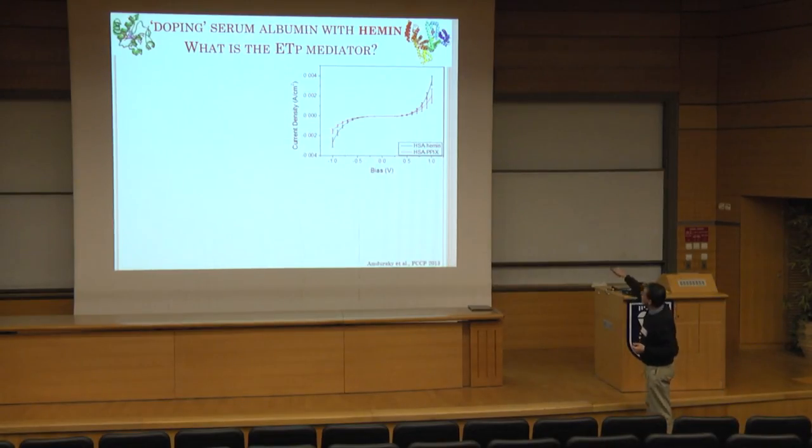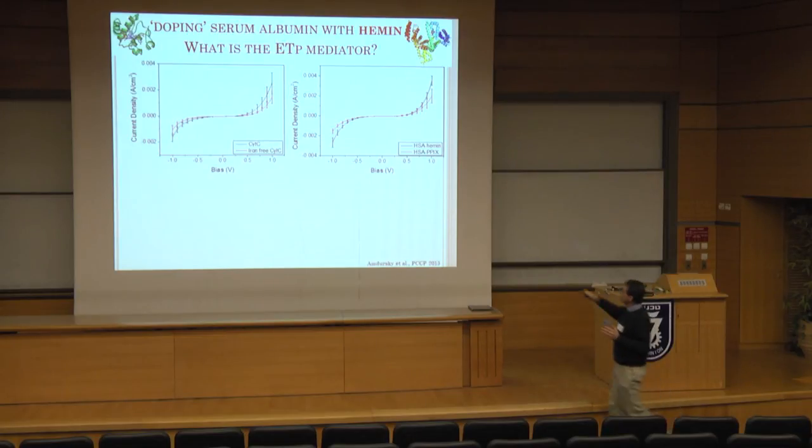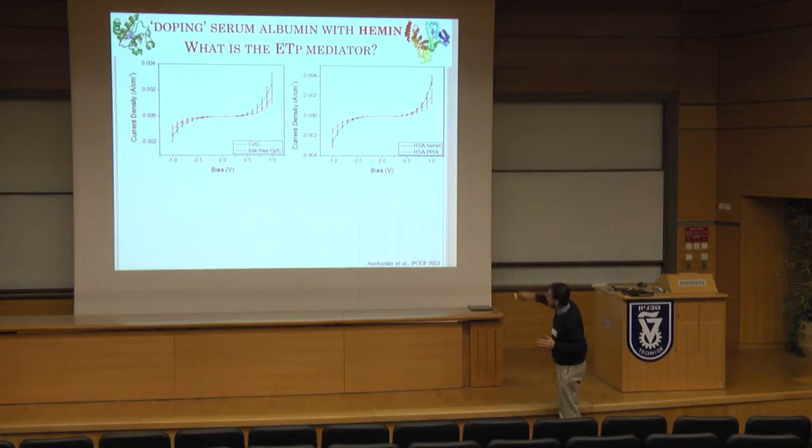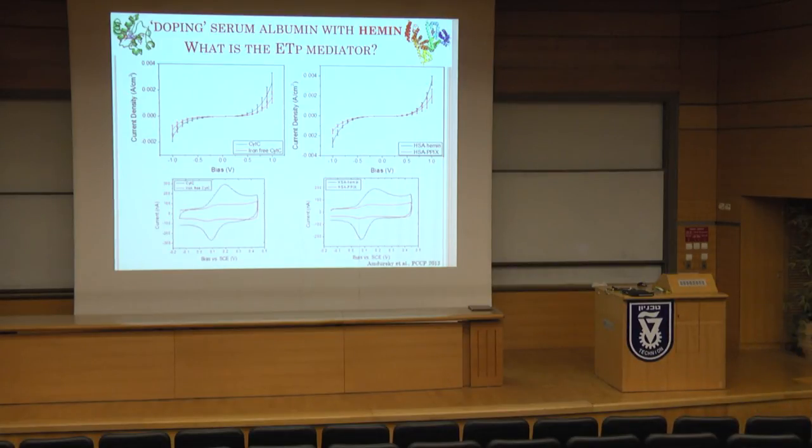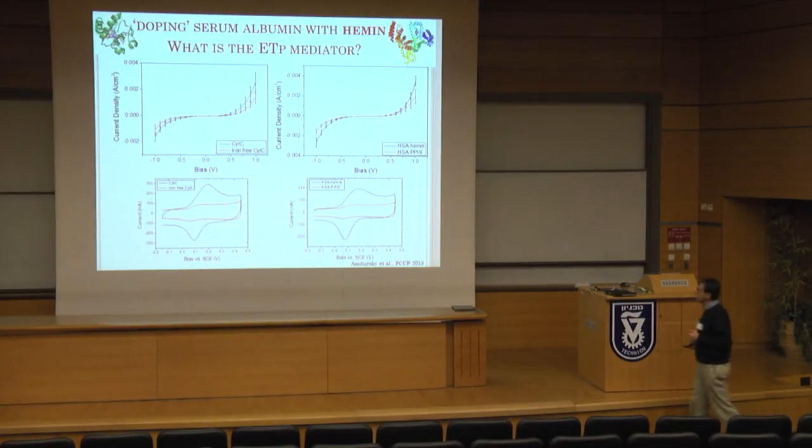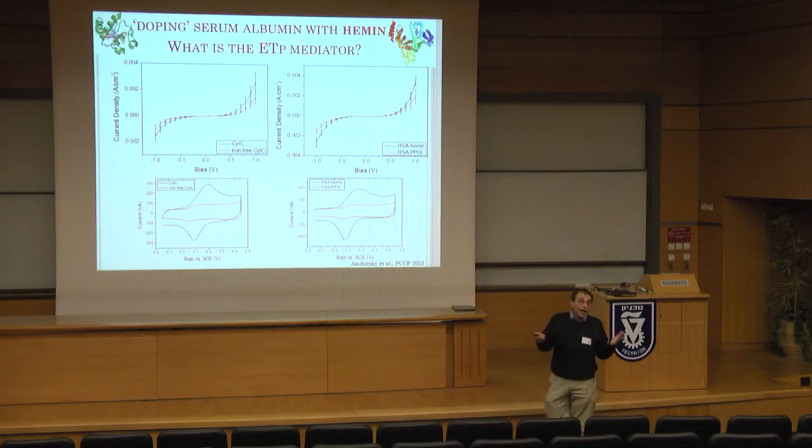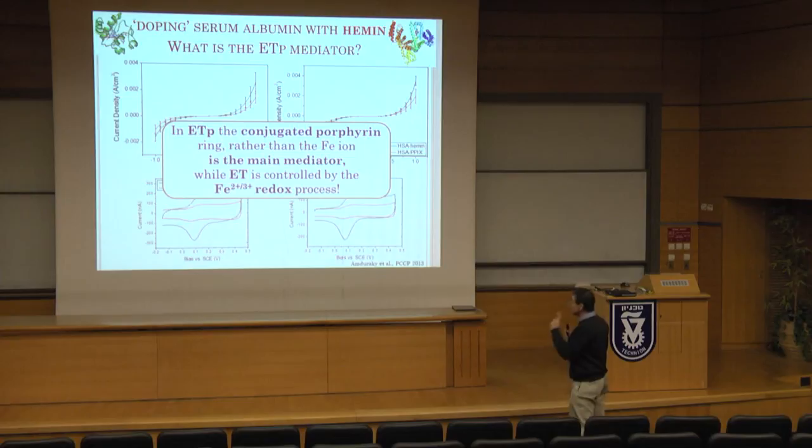So let's go a bit further. We can now compare the HSA heme with the HSA with just the microporphyrin. Without the iron. And the results are very similar. As we saw before for cytochrome C. If I take the iron out. However, if I do the electrochemistry, I get a huge difference. I essentially, within the cleanliness, the purity of my material, I lose the electrochemical reaction. Not surprising. Without the iron, the thing can't do what it's supposed to do. But what is the message from this? That in solid-state electron transport, it's the porphyrin ring rather than the iron that's the main mediator. While the electron transfer is always a redox control.